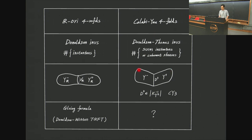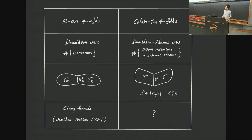Similarly, we can consider the degeneration of Calabi-Yau four-folds into the union of two four-folds with a common anti-canonical divisor D. So D is an anti-canonical divisor of both Y-plus and Y-minus. By adjunction, D itself is a Calabi-Yau three-fold. The question we want to discuss today is: what is the analogy of the gluing formula here, and potentially what is the underlying TQFT?